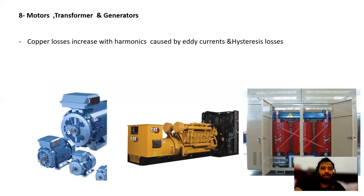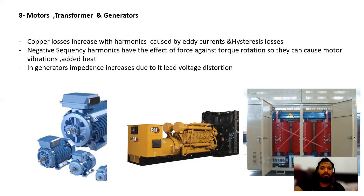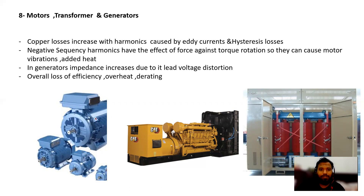In motors, transformers, and generators, due to high inrush currents, copper losses increase, and we also see increased eddy current and hysteresis losses. In motors and generators there are negative-sequence harmonics which oppose the fundamental frequency, generating a reverse torque. This reverse torque causes the motor to vibrate and overheat. In generators the voltage waveforms are distorted, increasing impedance, leading to efficiency losses, overheating, and derating of motors and generators.